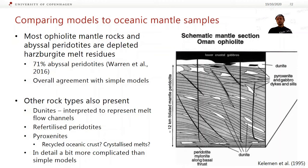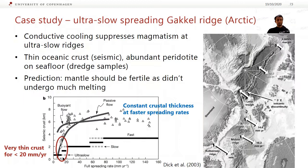On the right is an image from Keleman et al. 1995 — a schematic section of the Oman ophiolite. You can see the lower crustal gabbros at the top, some dunite which probably represents ultramafic cumulates formed at the bottom of the oceanic crust. The majority of the gray banded material is harzburgites, and then there are these dunite channels which are probably melt channels reacting away orthopyroxene.